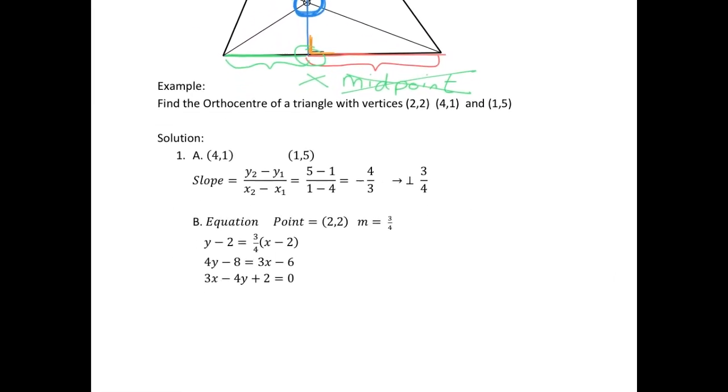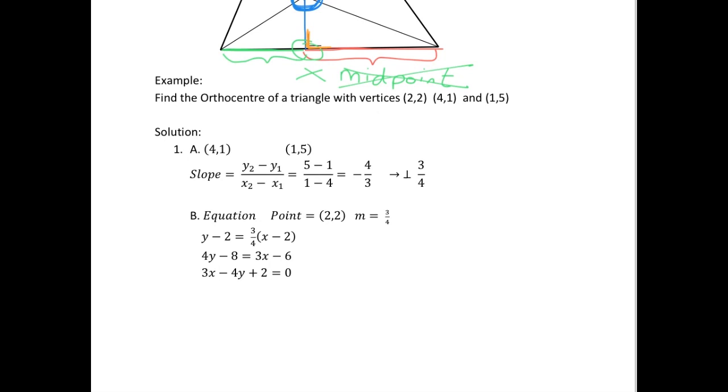So we're asked to find the orthocenter of a triangle with vertices at (2,2), (4,1) and (1,5).